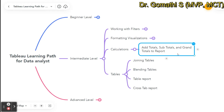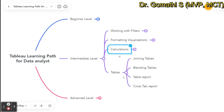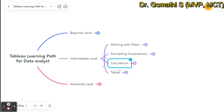For tables, you need to learn how to join two or multiple tables, and how to blend tables — joining and blending are two different things. You should also learn how to create a table report and a crosstab report. These topics cover the intermediate level for a data analyst.